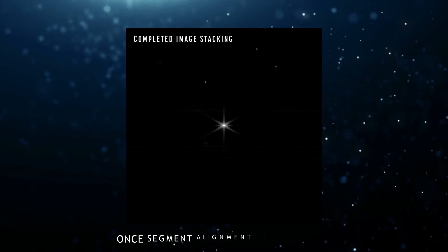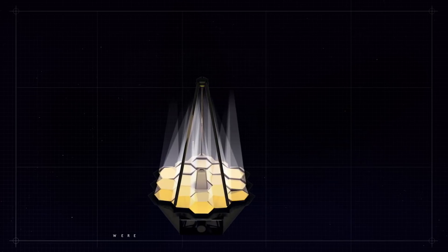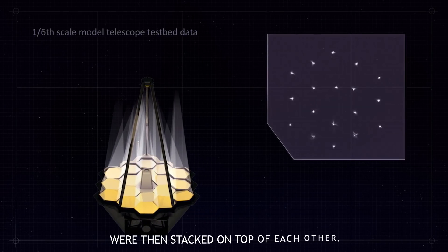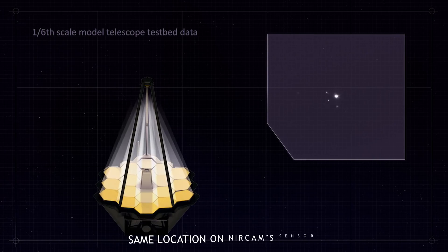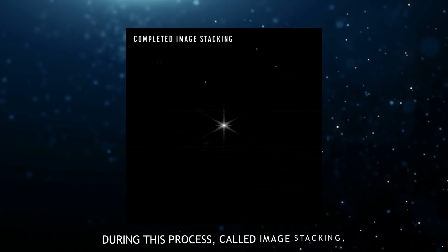Once segment alignment was achieved, the focus dots reflected by each mirror were then stacked on top of each other, delivering photons of light from each segment to the same location on NIRCam sensor. During this process, called image stacking,